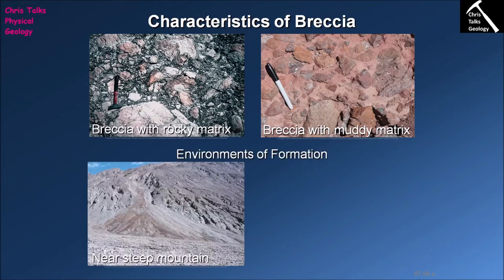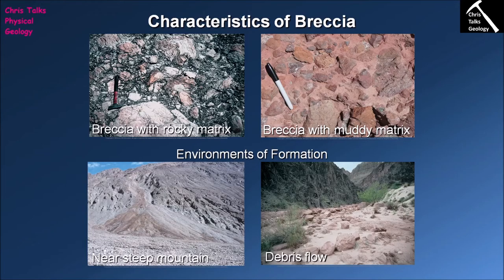In terms of breccias, because the clasts are angular, that suggests the sediment does not get transported very far. Whatever events form breccias tend to be relatively short-lived, because remember the longer something gets transported, the more rounded the clast will become. So because the clasts are so angular, that would suggest transport was not extensive.